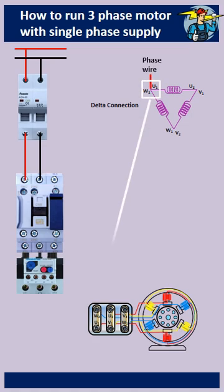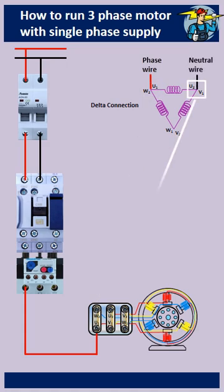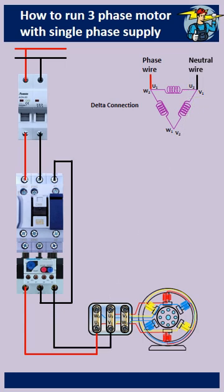Phase line need to be connected to U1 and W2 as shown in the diagram. Likewise, connect the neutral line to the V1 and U2 coil ends, as shown in the diagram.